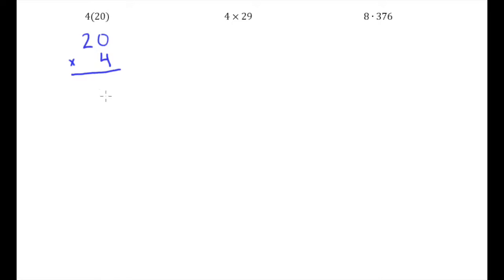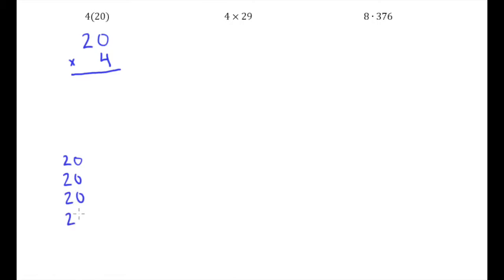Before we get to the process of multiplying in this vertical style, let's talk about what multiplication really means. If I say four times twenty, what I'm really asking is: if you have four twenties, how much do you have? In other words, if you have four twenty dollar bills, how much money do you have? Since I only have four of them, that can actually be written out by adding twenty to itself a total of four times.